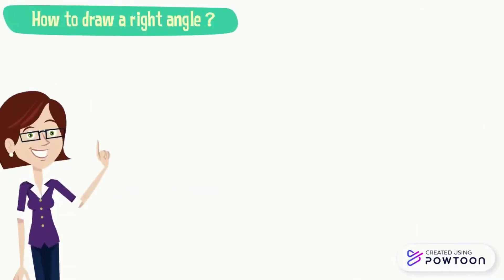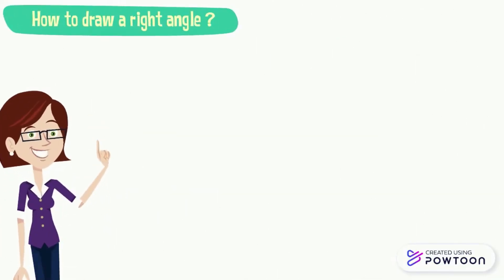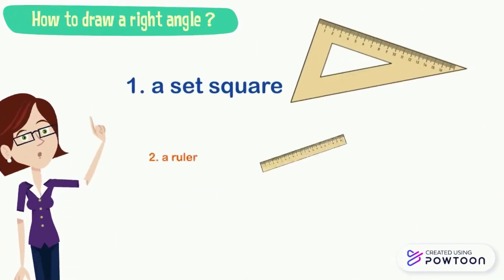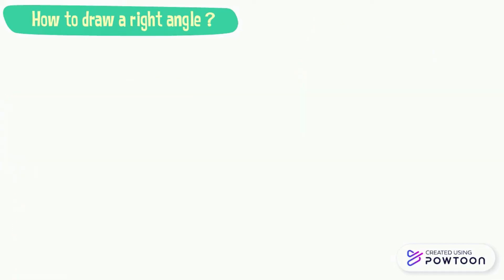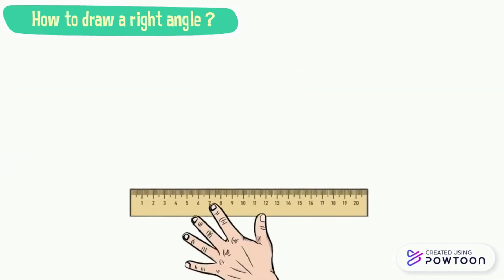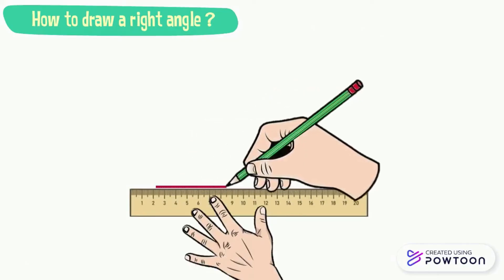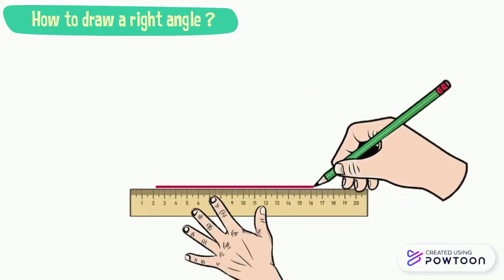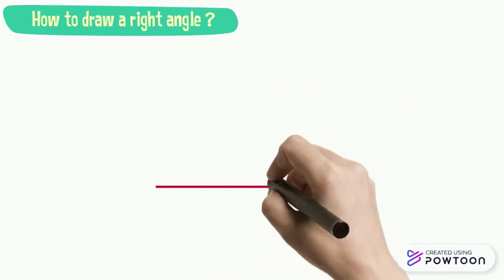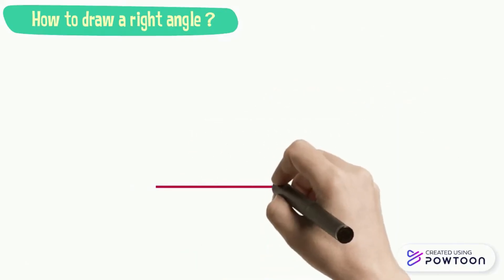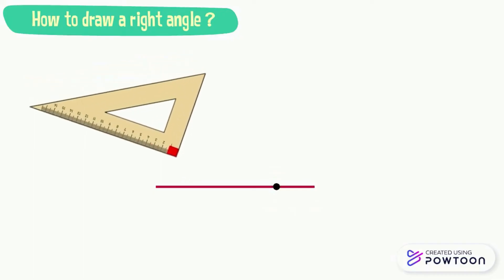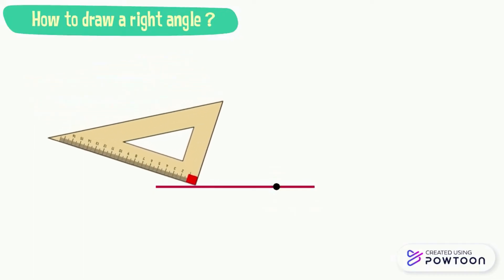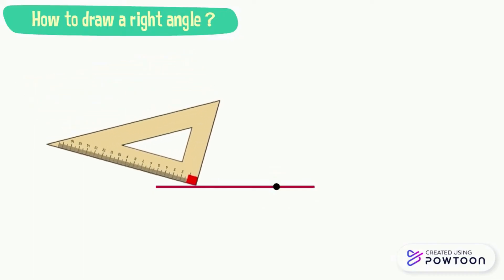How to draw a right angle? To draw a right angle, we need a set square, a ruler, and a sharp pencil, and we follow the next steps. First, draw a line and place a point on this line. Second, we place one side of the right angle of the set square on this line.